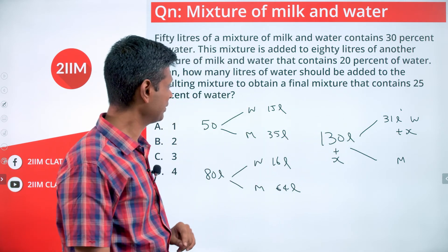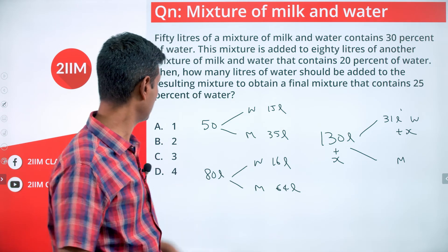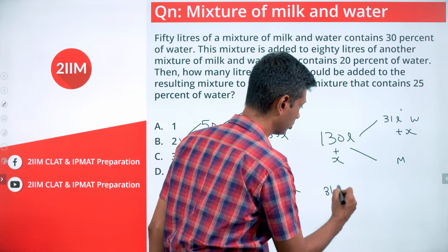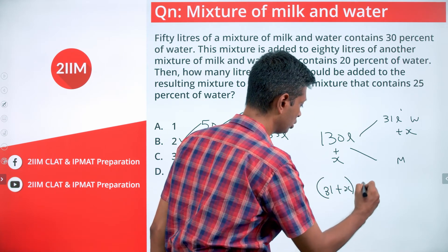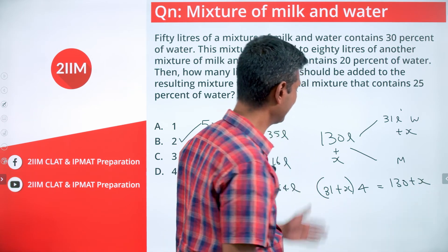The algebraic way of solving this, you want to say 31 plus x into 4 is 130 plus x. Solve this, we'll get x equal to 2.